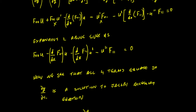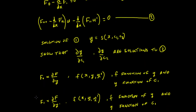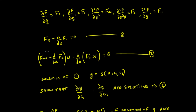So partial y by partial C1 is a solution to the Jacobi-Accessory equation. You can go through a similar proof for partial y by partial C2 — that should be 2 — and you'll see that is true as well. So that's a little proof that we can solve the Jacobi-Accessory equation by looking at the solution to the Euler-Lagrange and forming these partial derivatives. Thank you for listening — we'll use that again in the next couple of videos, and it's quite useful.